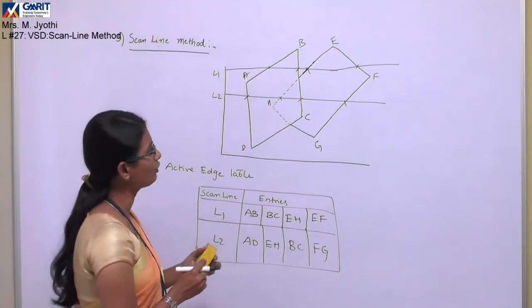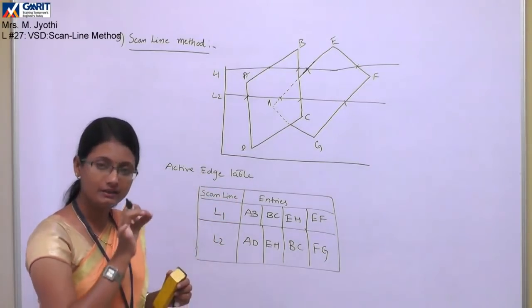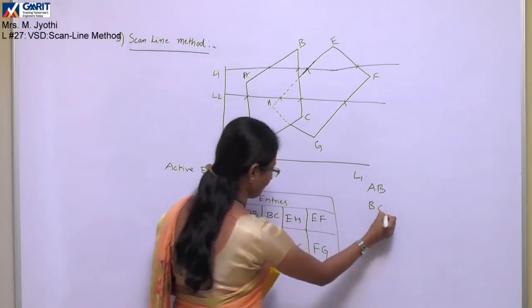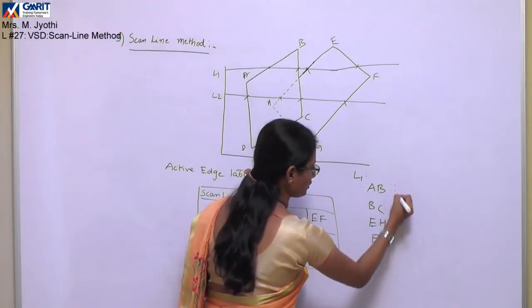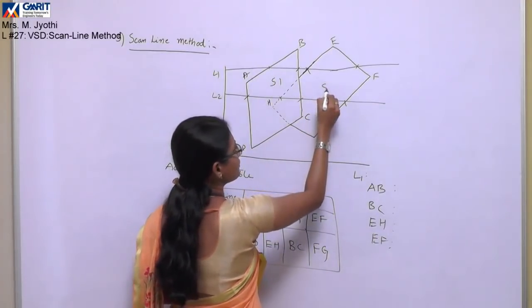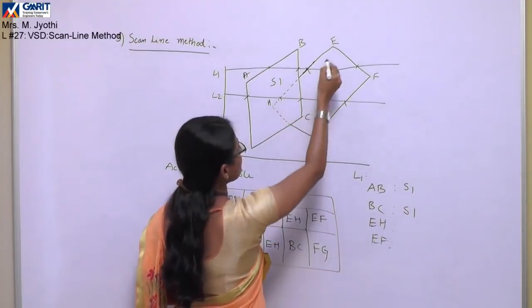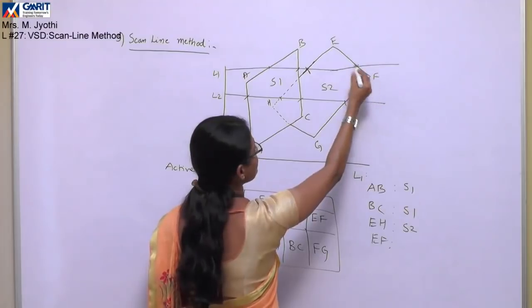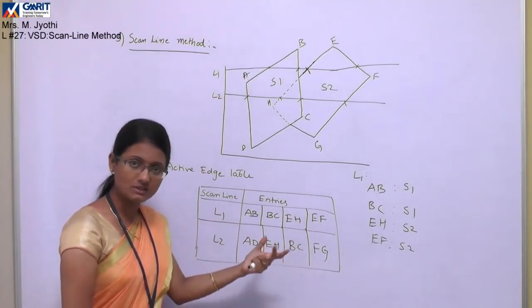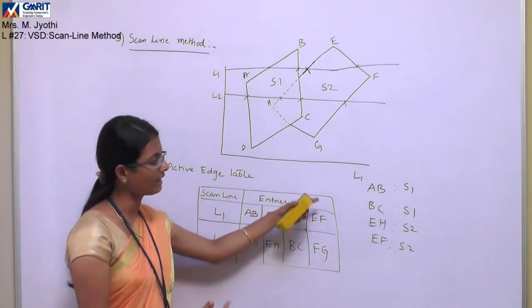Now, how do we find the visible surfaces? We use the in/out information from the polygon table. For L1, we have four edges: AB, BC, EH, and EF. For AB and BC, only surface S1 is present. For EH and EF, only surface S2 is present. Since there is no overlapping — it is either S1 or S2 — we directly store those intensity values and make them visible without any further processing.